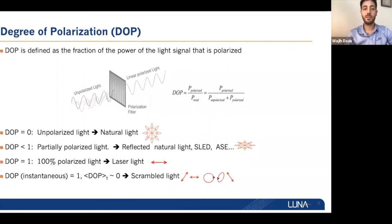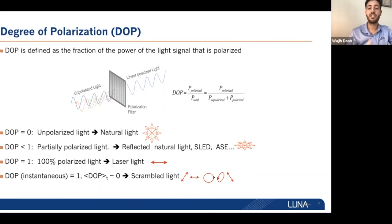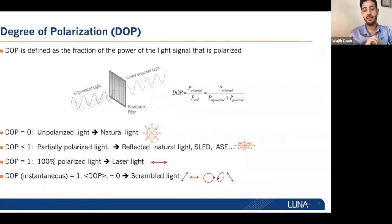The degree of polarization is defined as the portion of light that is polarized — it's the ratio of the power of the polarized fraction to the total power. When the degree of polarization is zero, this is unpolarized light, such as natural light from the sun. If it's one or 100 percent, this is fully polarized light, and anything in between is partially polarized. With a scrambling technique — taking 100 percent linearly polarized light and rapidly changing the state of polarization on the Poincaré sphere — the time average can be close to zero depending on the detection speed.